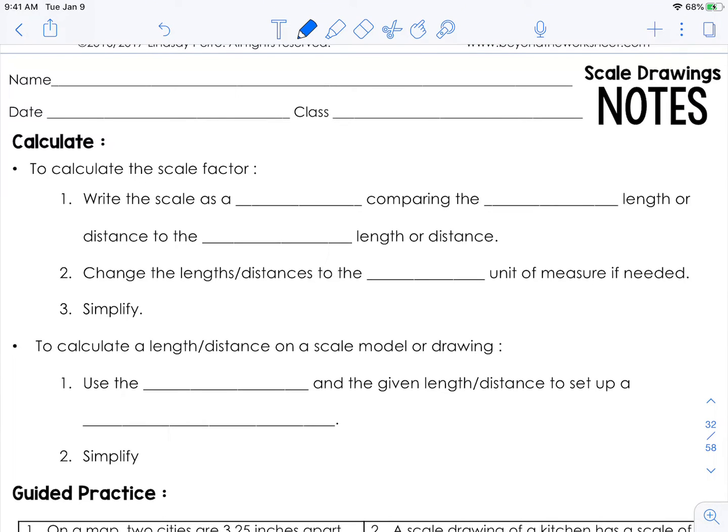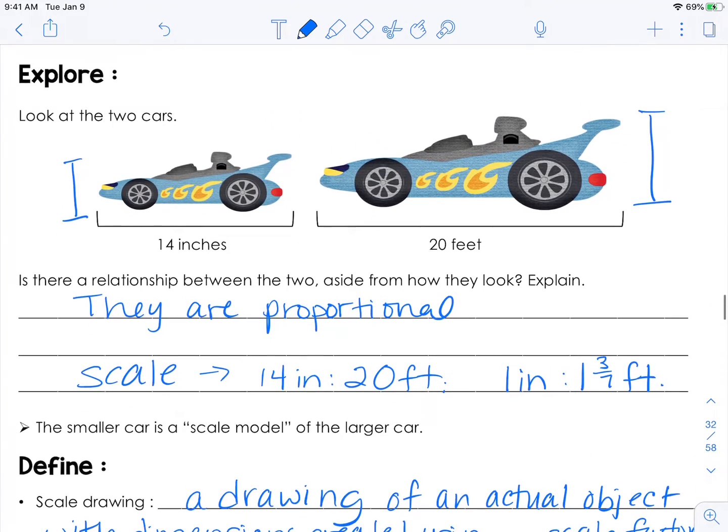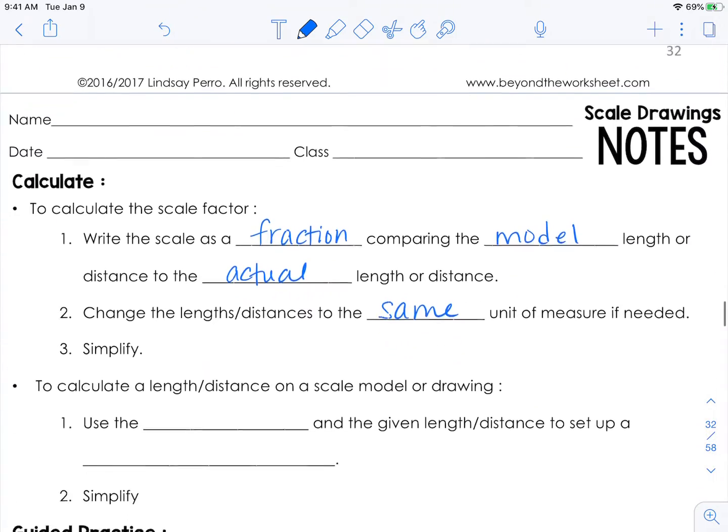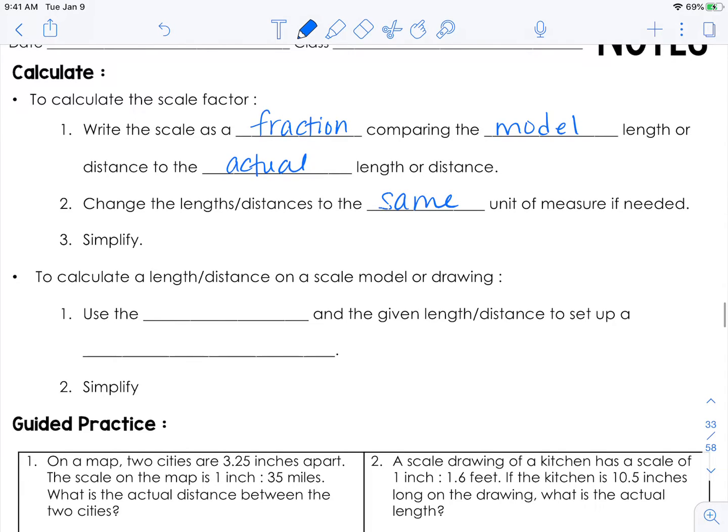So let's talk about how to calculate scale factor. So the first thing you're going to do is you're going to write the scale as a fraction that compares the model length or height or distance or whatever it is to the actual length or distance or height. So you compare the model, the scale drawing, the scale model to the actual. You change the length or distance to the same unit of measure if needed. So that means back up here with these cars we're comparing 14 inches to 20 feet. If you wanted to get a super accurate scale factor you would convert either them both to feet or both to inches. And then you would simplify.